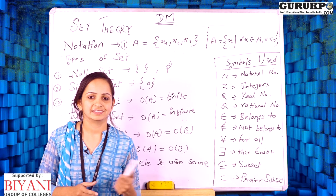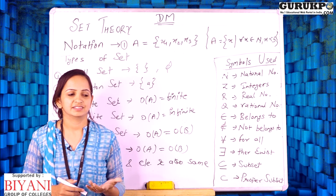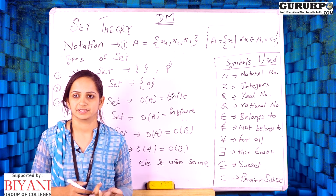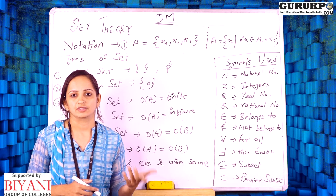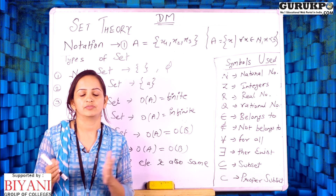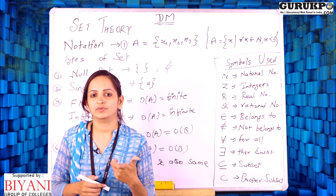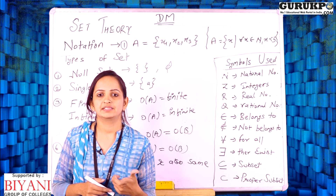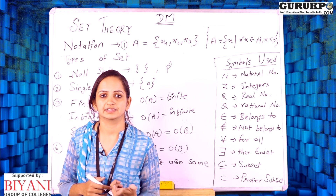Before starting set theory, let us understand what a set is. A set is a collection of well-defined objects. In our daily routine, if we say set of books, set of students, set of flowers — anything that is a collection of objects is called a set. But the problem is how we can define or notate the set mathematically, in the branch of discrete mathematics.